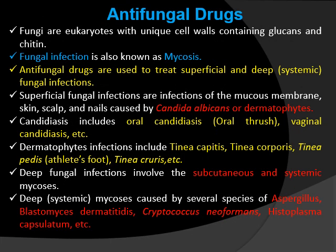Antifungal Drugs. Fungi are eukaryotes with unique cell walls containing glucans and chitin. Fungal infection is also known as mycosis. Antifungal drugs are used to treat superficial and deep fungal infections. Superficial fungal infections involve skin and mucous membrane, while deep fungal infections involve subcutaneous tissue, lung, and spreading of infection to various organs such as meninges through blood.